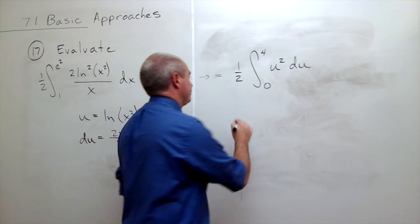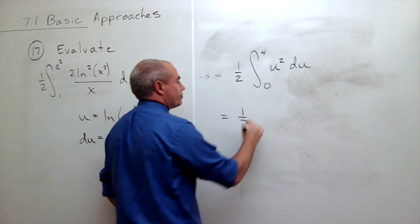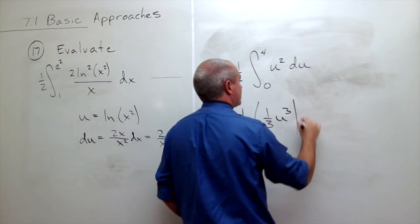So let's take an anti-derivative. And I get 1 half. Anti-derivative of u squared is 1 third u cubed evaluated from 0 to 4.